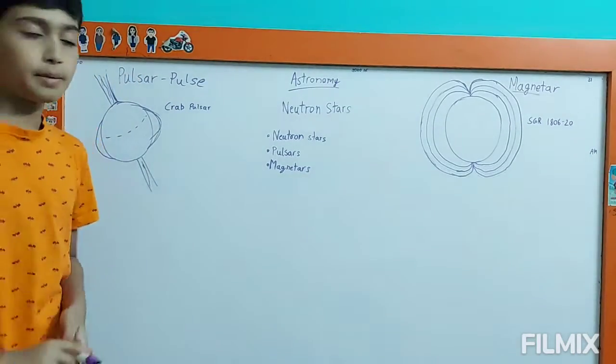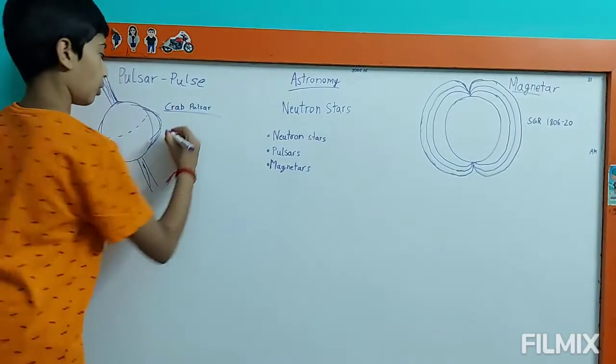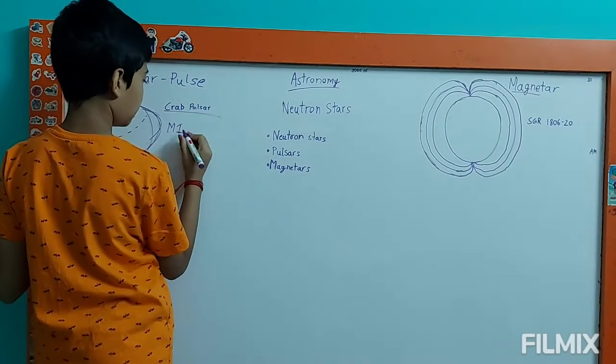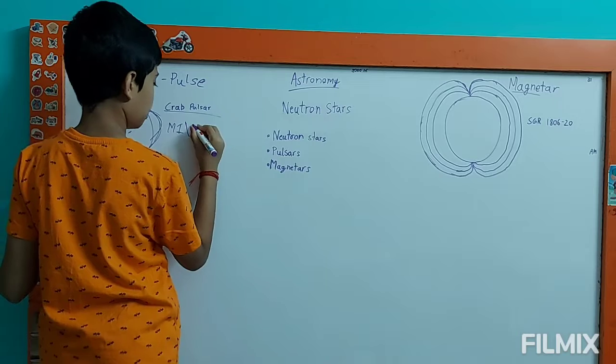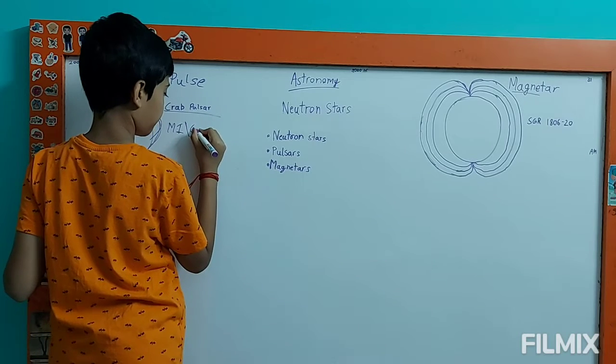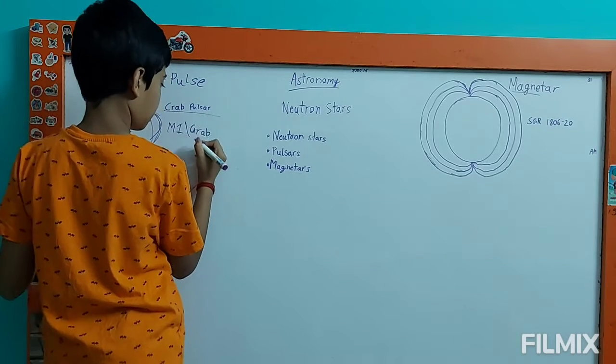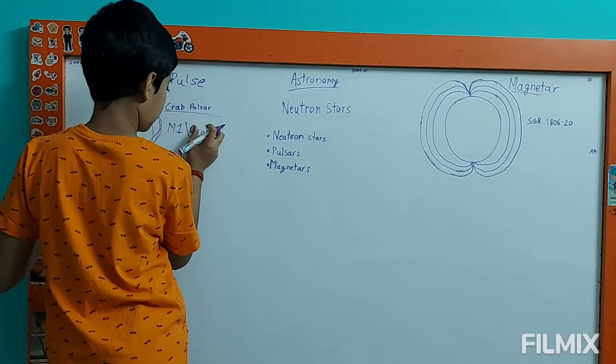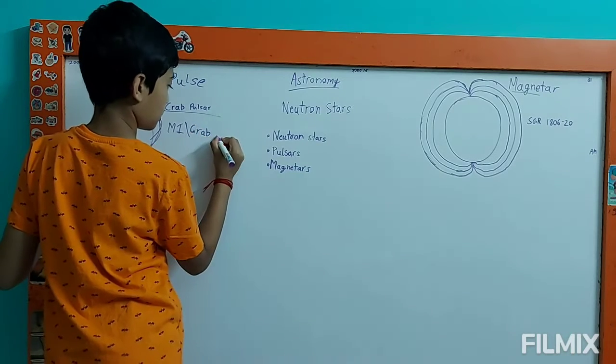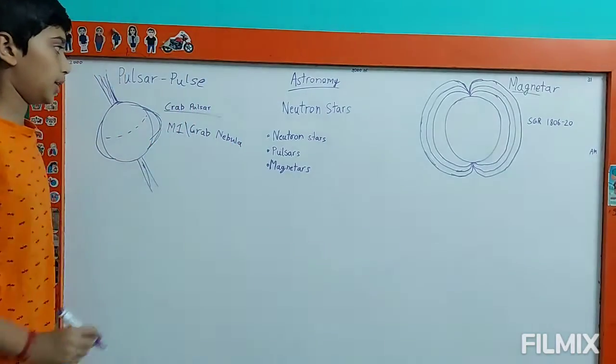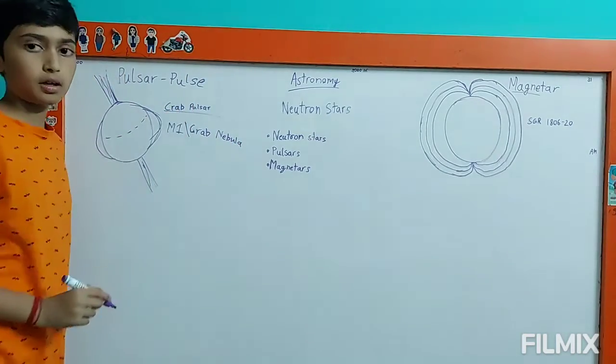A well-known, the most famous pulsar is the crab pulsar, located in the middle of Messier 1, M1, also known as the Crab Nebula. That's why it's called the Crab Pulsar.